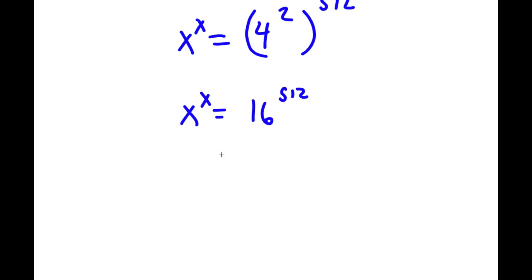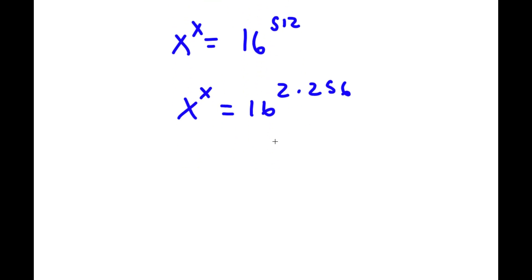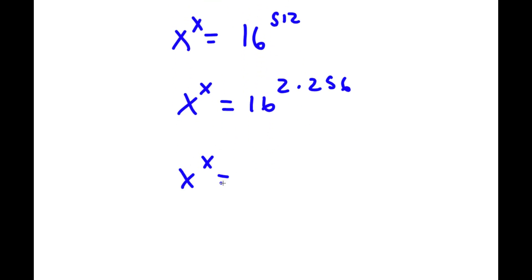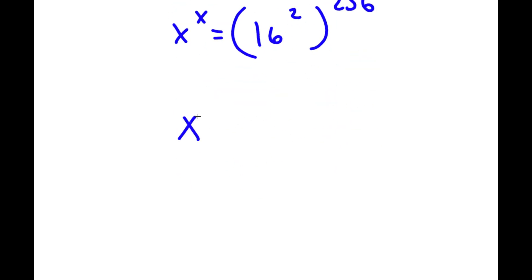I'm going to do this again. So x to the power of x equals 16 to the power of 512, which is the same as 16 to the power of 2 times 256. This is equal to 16 to the power of 2 to the power of 256. And 16 to the power of 2 is simply equal to 256. So now I have x to the power of x is equal to 256 to the power of 256.